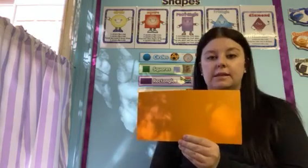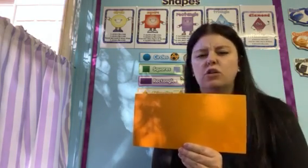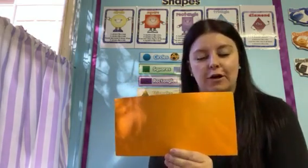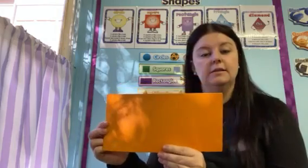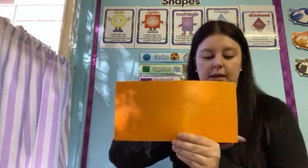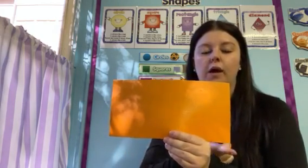Let's say our Ricky Rectangle poem: 'Ricky Rectangle is my name. My four sides are not the same. Two are short and two are long. Count them all — one, two, three, four, come right along.' Like the poem said, there are four sides in a rectangle — one, two, three, four. That means there are four corners as well — one, two, three, four.